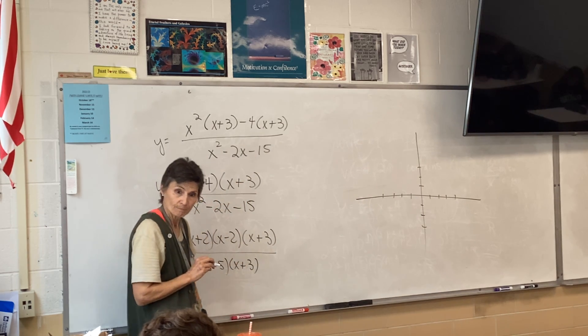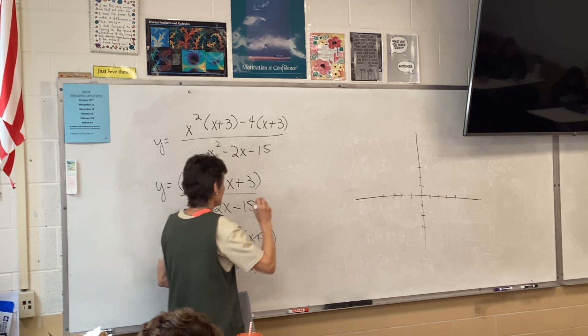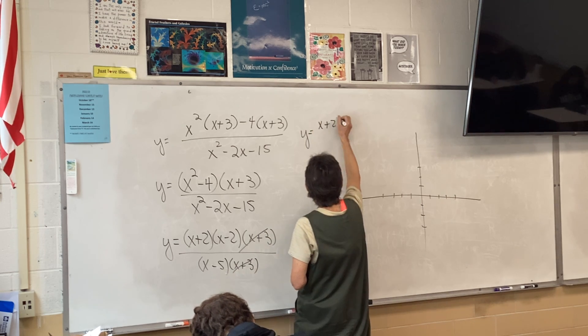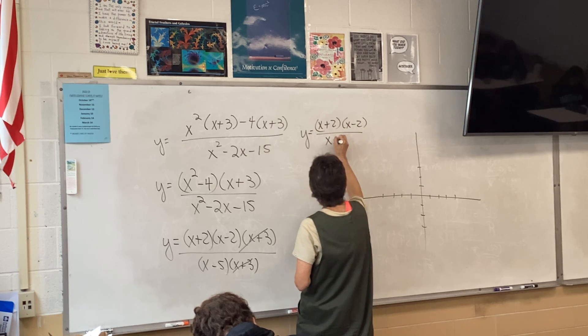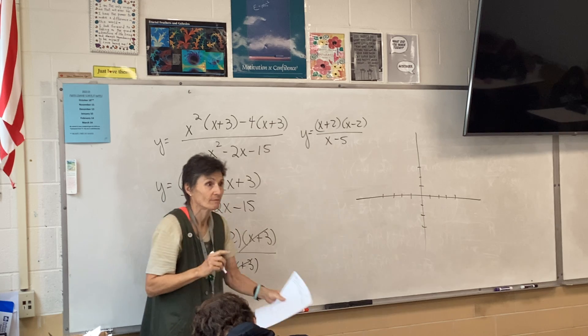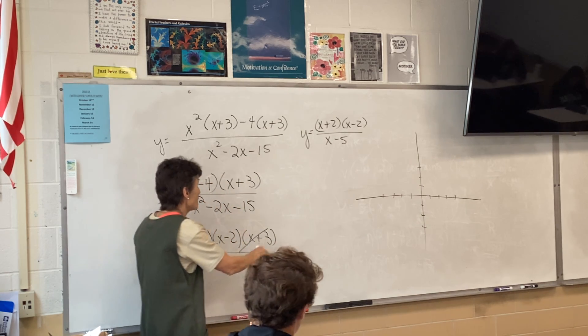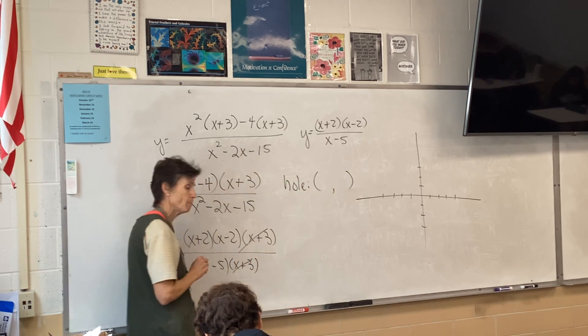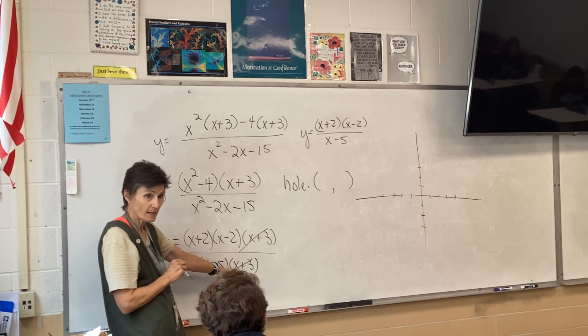What do you notice? You can cancel something out. So we're ultimately going to end up graphing (x+2)(x-2) over (x-5). But because we could cancel, our picture is going to have a hole, and where will that hole be? Where x is negative 3.